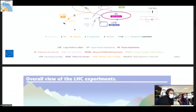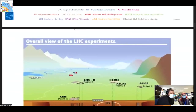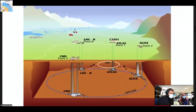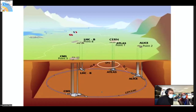The actual accelerator and detectors are below the ground — 100 meters underground — and the LHC is 27 kilometers in circumference.